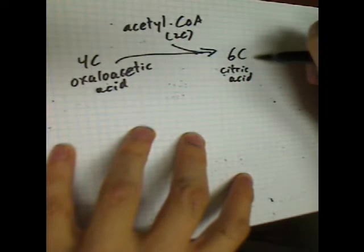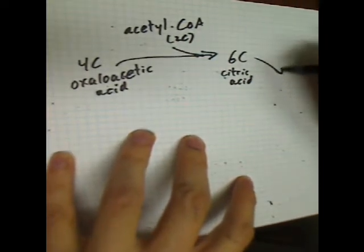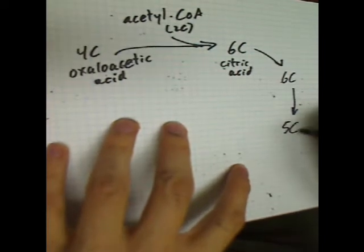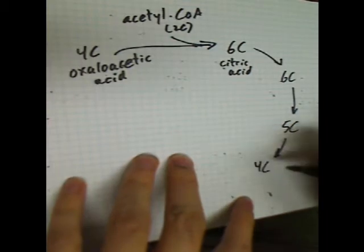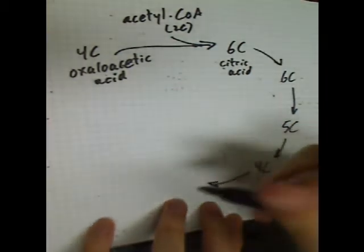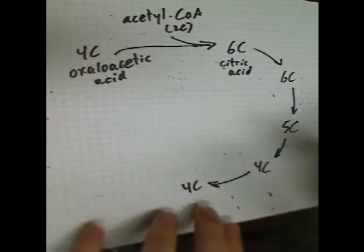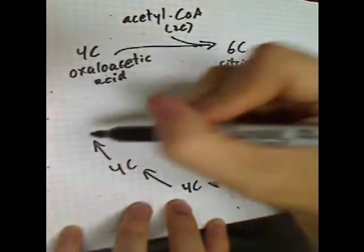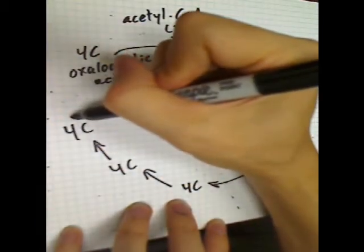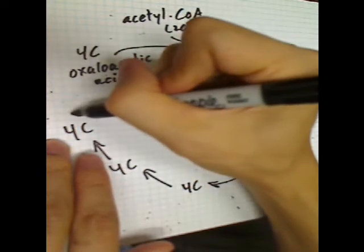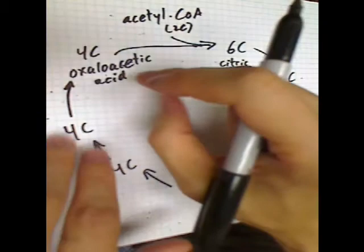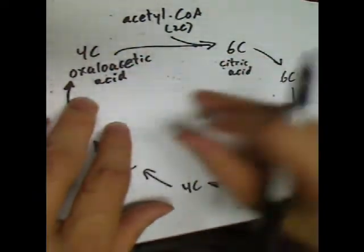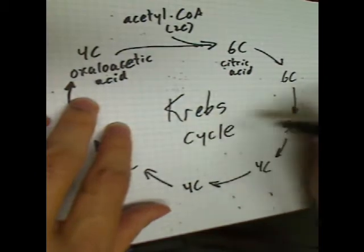An enzyme is going to grab this six-carbon compound and rearrange it into a different six-carbon compound. Something else will take that and turn it into a five-carbon compound. Something takes that five-carbon compound and turns it into a four-carbon compound. Something takes that four-carbon compound and turns it into a different four-carbon compound, then another four-carbon compound, and yet another four-carbon compound. Finally, an enzyme takes this four-carbon compound called malic acid and converts it into oxaloacetic acid, which is then available to be joined to yet another acetyl-CoA for another round of the cycle. That's what makes the Krebs cycle a cycle — it regenerates itself.